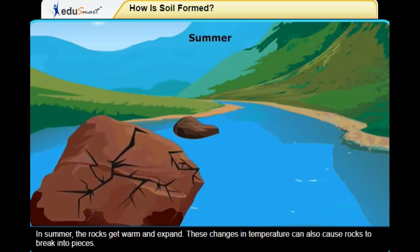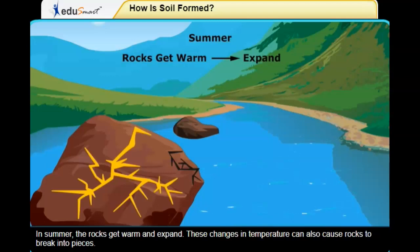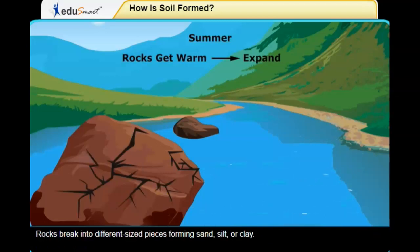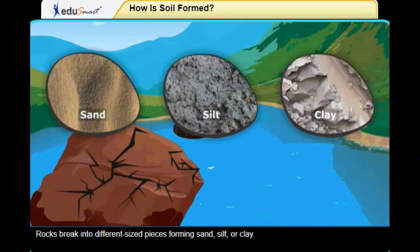What do you think happens to the rocks in summer? In summer, the rocks get warm and expand. These changes in temperature can also cause rocks to break into pieces. Rocks break into different sized pieces forming sand, silt, or clay.